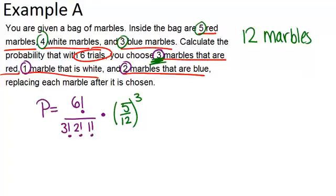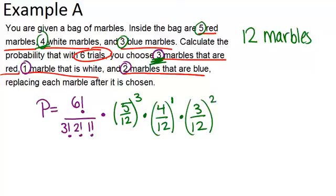Next we're going to do the one marble that is white. What's the probability of picking a white marble? Well there are four white marbles, so the probability is four out of twelve. And we would raise that to the first power because we're only choosing one. Last we want to talk about the marbles that are blue. There are three blue marbles, so the probability of a blue marble is three out of twelve, and we raise that to the second power.